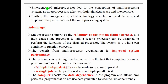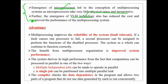Now let's have a glance on how the concept of multiprocessing systems has emerged. The first reason is the emergence of microprocessors, i.e. microprocessors led to the adoption of multiprocessing systems as the microprocessors take very little space and are inexpensive. The second notable reason is the emergence of VLSI technology because VLSI technology has reduced the cost and improved the performance of the multiprocessing system.